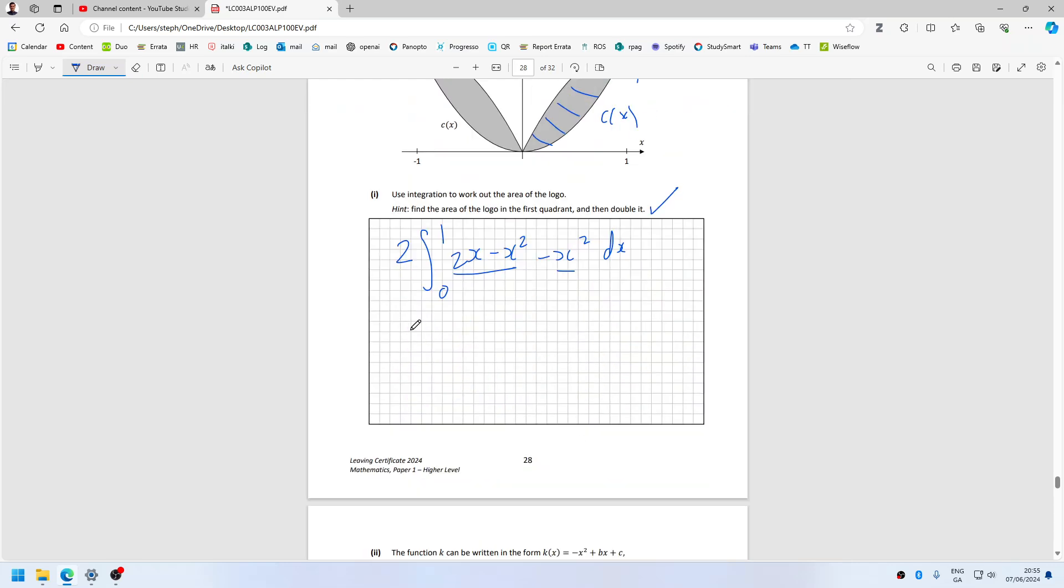All right, so that's 2 times the integral from 0 to 1 of 2x minus 2x squared dx. I can actually take out the 2, so that's 4 times the integral from 0 to 1 of x minus x squared dx.